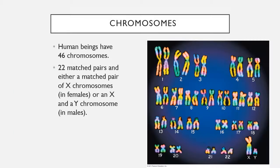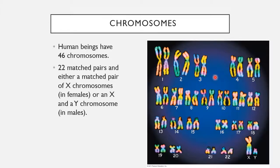We have a total of 23 pairs of chromosomes — that's 46 chromosomes total in humans. There are 22 matched pairs of chromosomes, meaning one chromosome from mom and one from dad that are the same chromosome just from either parent. Then we have one pair of non-matched chromosomes, which are your X and Y chromosomes.